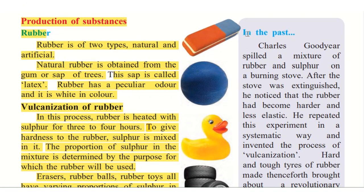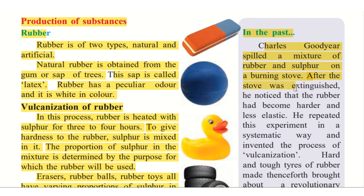Let's learn about how this process was first discovered. In the past, Charles Goodyear spilt — that is dropped — a mixture of rubber and sulphur on a burning stove. By mistake, when he was mixing rubber and sulphur, some of it fell on a burning stove and got heated up. After the stove was extinguished — that is, the fire was put off — he noticed that the rubber had become harder and less elastic. It had become a hard substance.